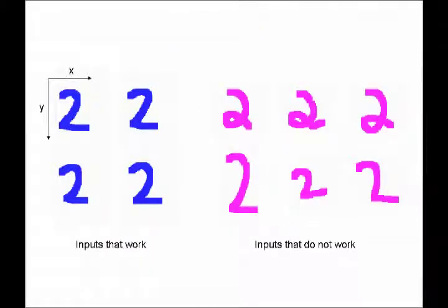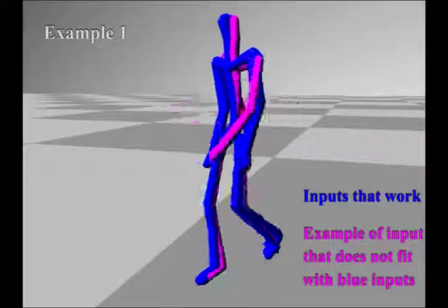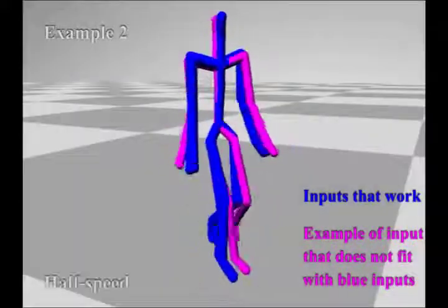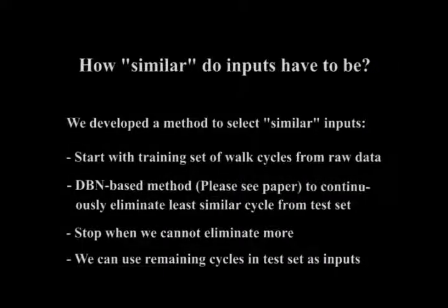Our approach needs 4 or more of the inputs that work. Intuitively, the inputs that work are similar when plotted in a graph like this one. The same is true for human motion with many degrees of freedom. Our approach works for similar types of inputs. We developed a method to select similar inputs from raw data.